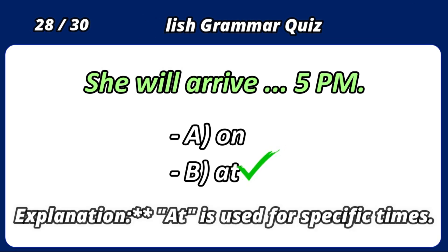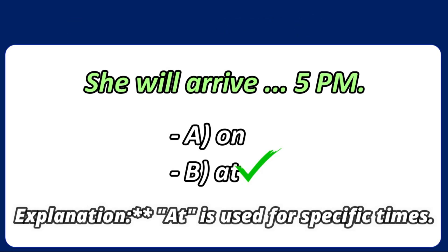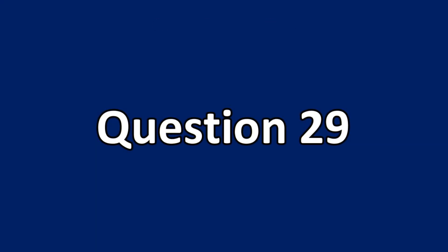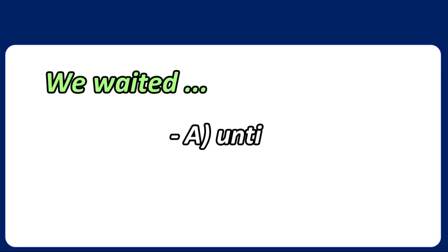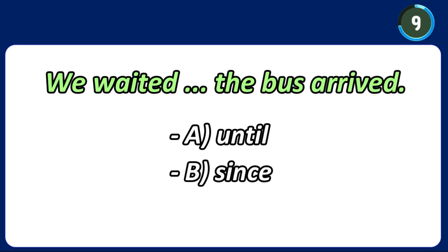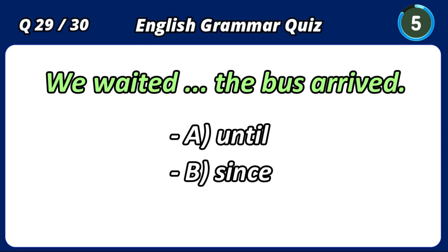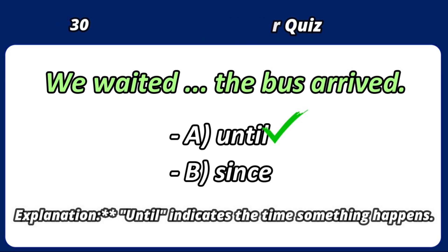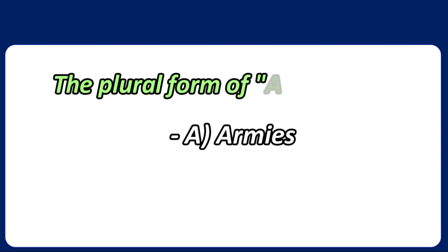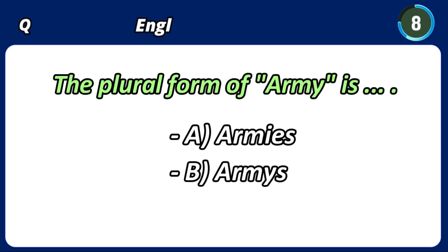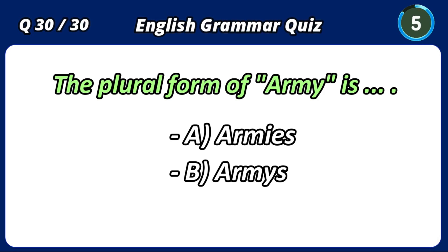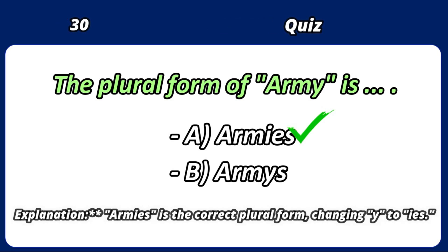At is used for specific times. Until indicates the time something continues until. Armies is the correct plural form, changing y to i-e-s.